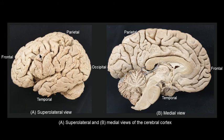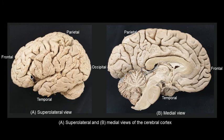The central sulcus separates the motor area from the sensory area. It is of great importance because the gyrus which lies anterior to it contains the motor cells, which initiate the movements of the opposite side of the body. We are referring to this gyrus, which is the precentral gyrus, sandwiched between the central sulcus and the precentral sulcus — both of them running parallel to each other.